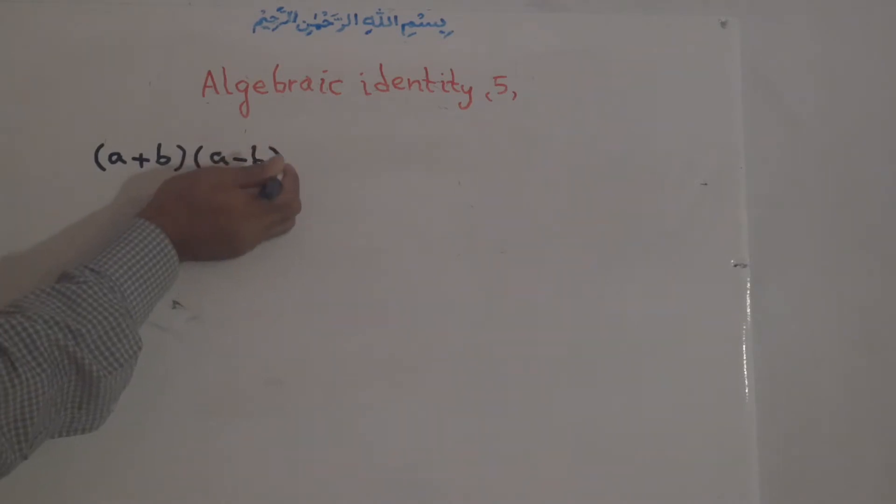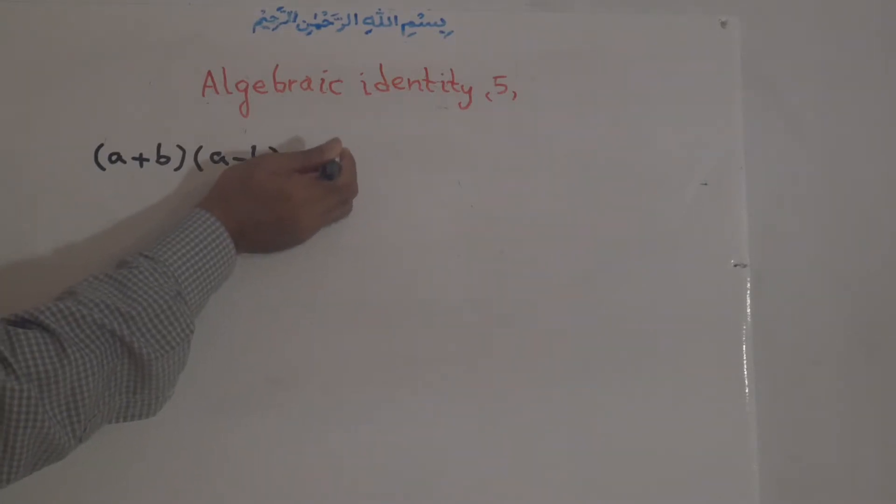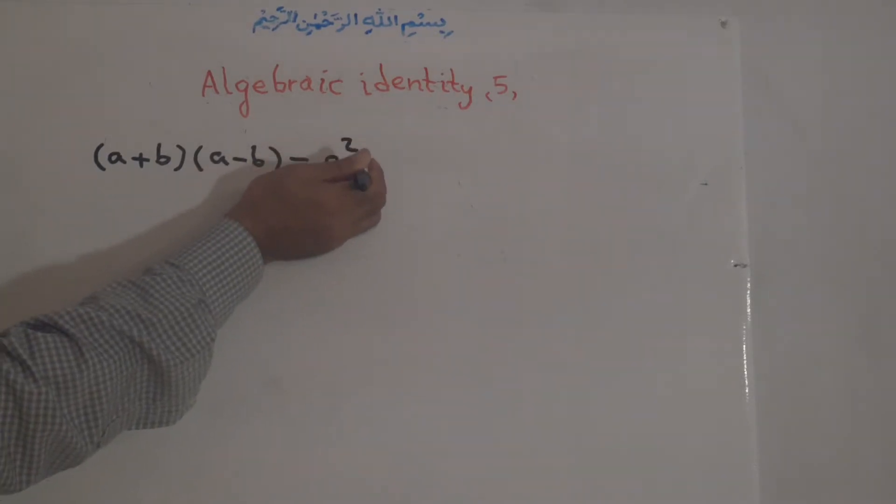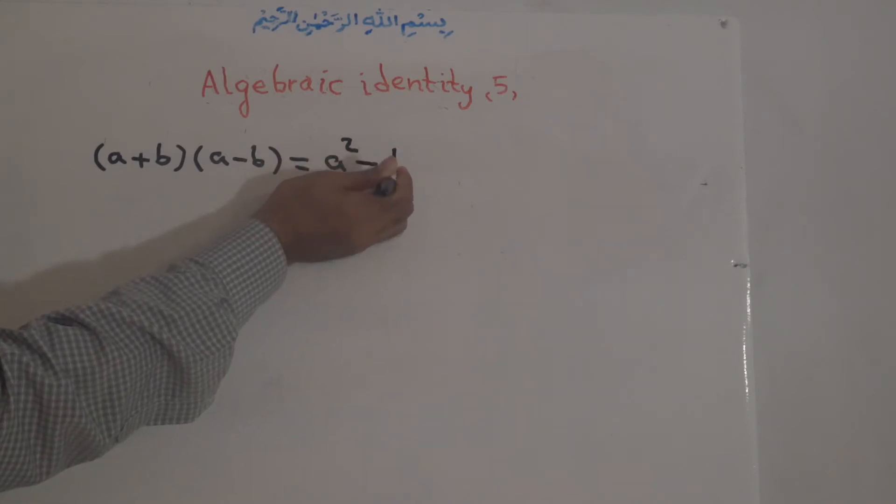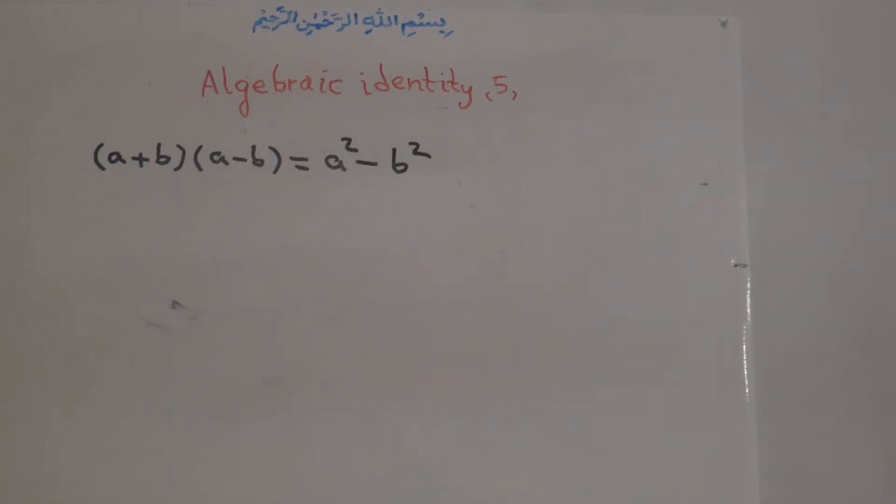And the product of this multiplication is the first term squared or to the power of 2, A to the power of 2 minus B to the power of 2. And also, they call this kind of multiplication conjugate multiplication.